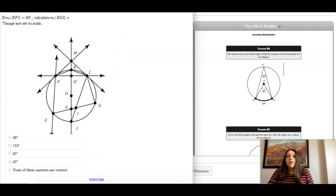All right, the measure of E, F, L is 90 degrees. So E to F to L is 90. We want to calculate E to G to L, this angle. So again, I need to notice that this makes up what we call a quadrilateral. It's called quadrilateral because it has four sides. One, two, three, four.